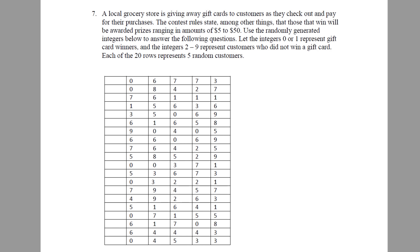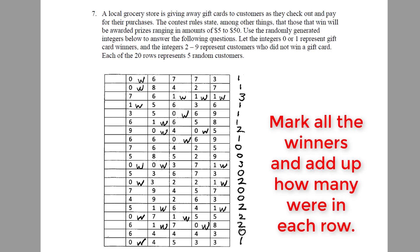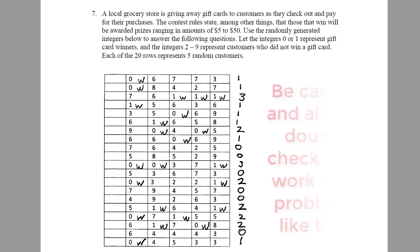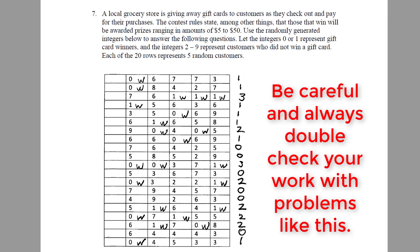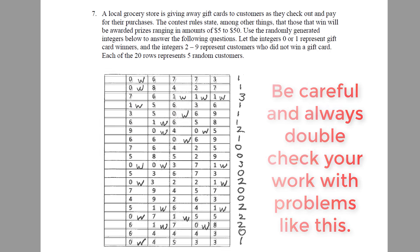So we know at this point that 0 and 1 represent winners, where 2 through 9 represent people who did not win. So at this point, we need to go ahead and figure out who won and who lost. So I would go ahead and circle, underline, or even highlight the winners here.